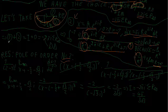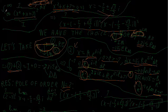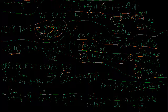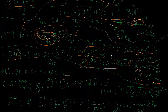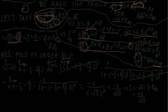Now we apply the residue theorem. Our contour integral is made of two parts: part one is along the real axis from −∞ to +∞, which is our original integral, and part two along the half circle, which vanishes. So our integral equals −2πi times the sum of residues, with the minus sign because we go clockwise in the lower half plane.